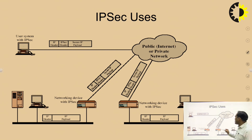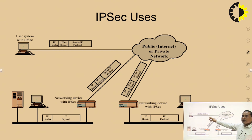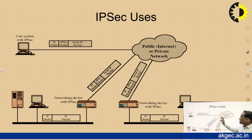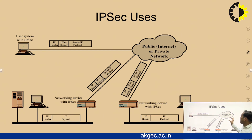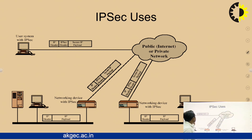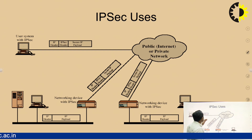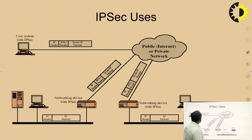Internet Protocol Security starts from the main point — the public or private internet network. A person sitting in one country wanting to communicate to another, or a person in India wanting to communicate from one network to another network, can do so using IPsec. When a user has IPsec, data is sent in the form of an IP header, an IPsec security header, and a secure IP payload.